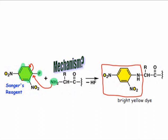Sanger's reagent is a unique shade of yellow, so the tagged amino acid can be distinguished from the others by visible spectroscopy methods.